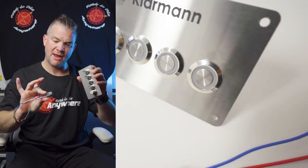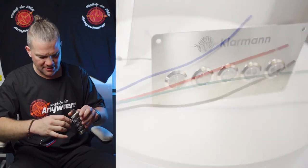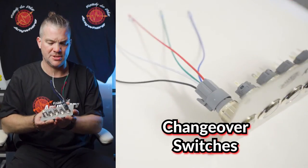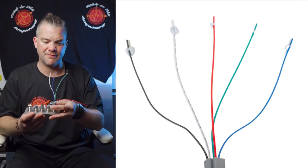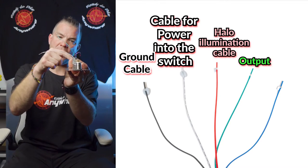You can see every switch comes with a plug, so it makes it easy to wire it into your vehicle. These switches are changeover switches with background illumination. You get five cables—the white cable is the power into the switch.